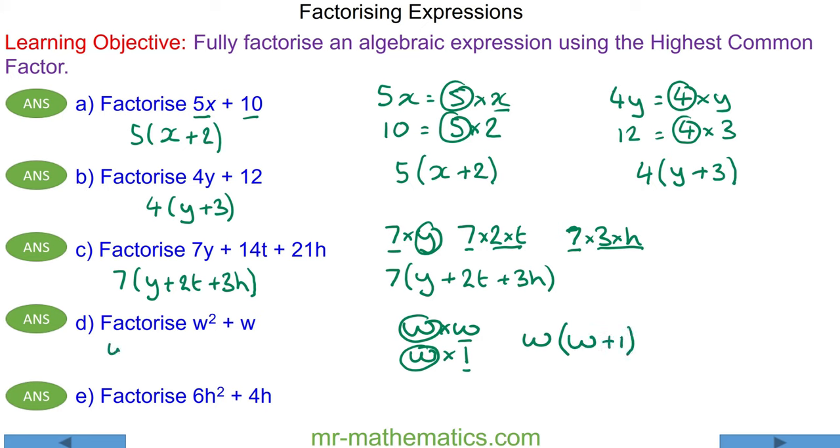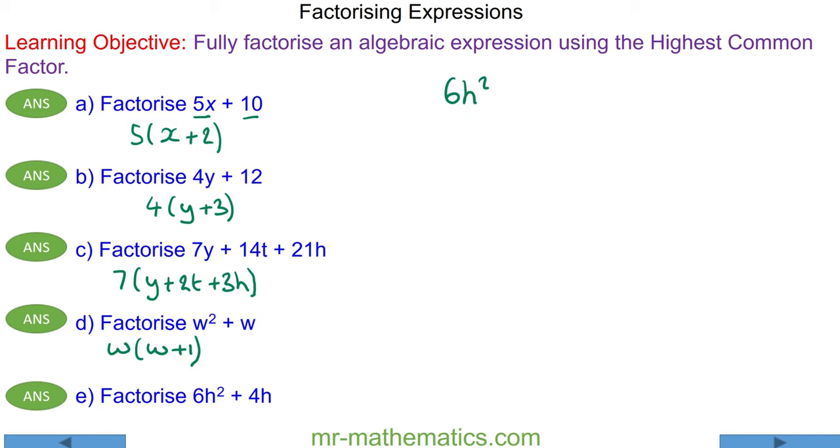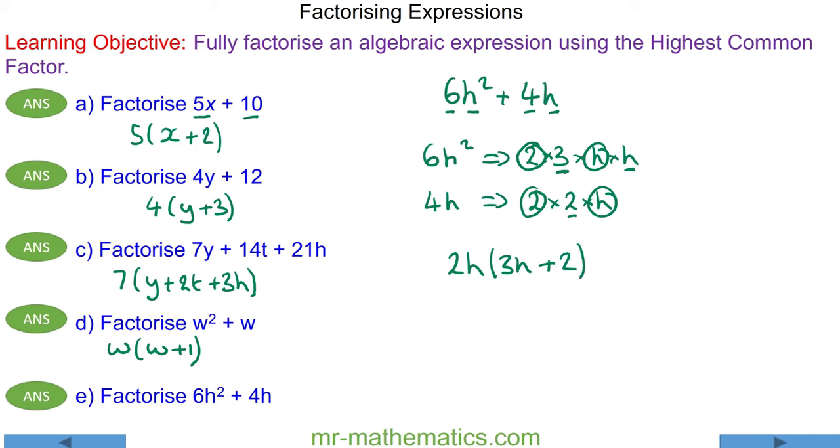And for question E, we have 6h squared plus 4h. We'll consider each in turn. 6h squared can be written as 2 multiplied by 3 multiplied by h multiplied by h, and 4h can be written as the product of 2 and 2 and h. And you can see by writing these products out separately, 2 is a common factor, but so is h. So the highest common factor in this case is 2h. So 2h times 3h would make the 6h squared, and 2h times 2 would make the 4h.